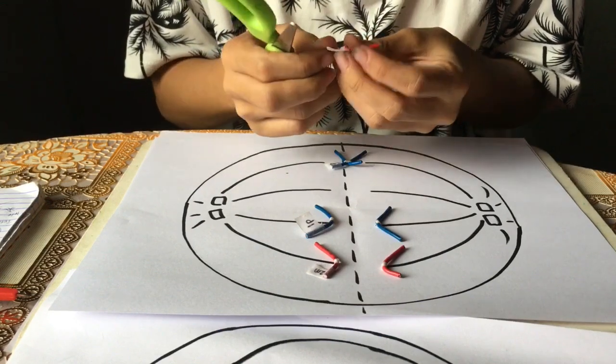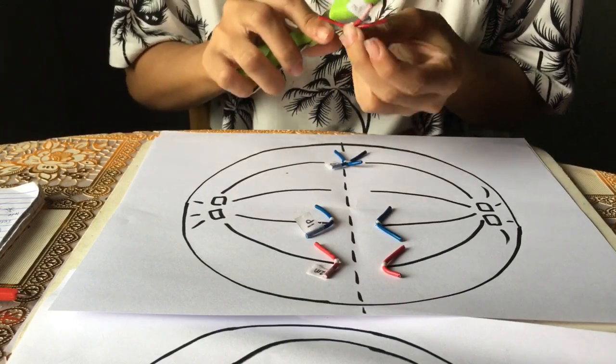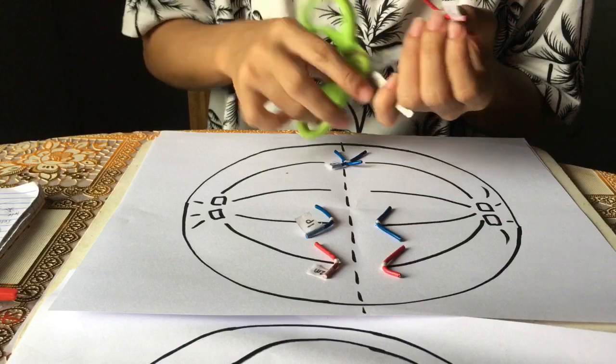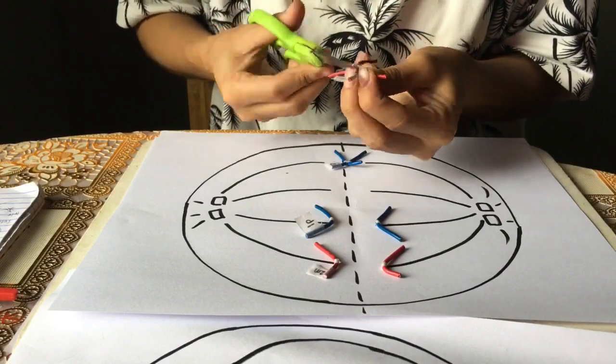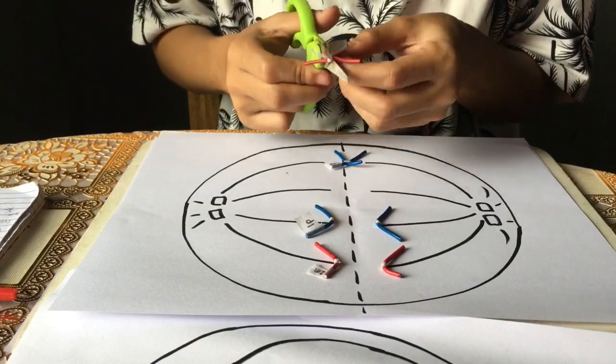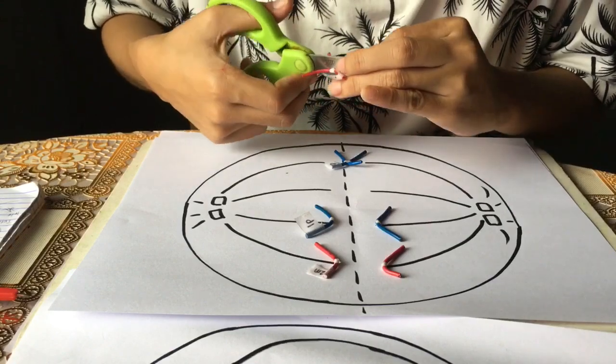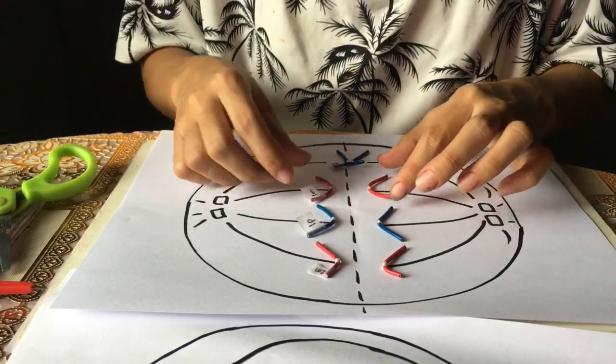In anaphase, the paired chromosomes separate at the kinetochores and move to opposite sides of the cell. Motion results from a combination of kinetochore movement along the spindle microtubules and through the physical interaction of polar microtubules.